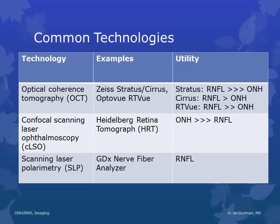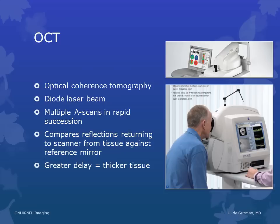This lecture will be mostly about the OCT because that's the most common machine locally. OCT uses a diode laser light source and it performs multiple A scans in rapid succession. It compares the reflections of the light returning to the scanner from the sample or the tissue against reflections returning from the reference mirror. When there's a greater delay in the reflection, that means that the tissue being examined is thicker. The photo above is the Stratus OCT and the photo below is the Cirrus OCT.